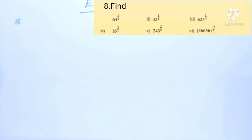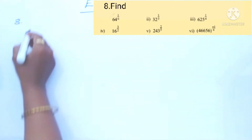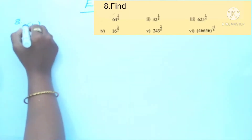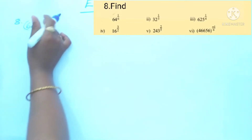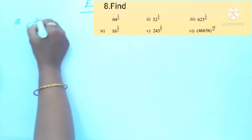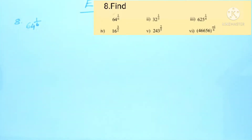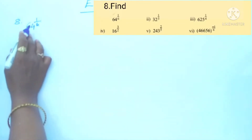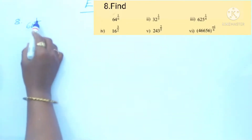Hello students, welcome to my channel. Today we will solve our eighth problem in Exercise 1.4. We need to find 64 to the power 1 by 6. There are a total of 6 problems given, and our first one is 64 to the power 1 by 6.